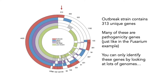When we look at those 313 genes, many of them are pathogenicity genes, just like that Fusarium example. The key point is that you can only identify these genes by looking at lots of genomes. If we had only the outbreak strain genome, we would have had many thousands of genes and wouldn't have known which ones are causing the damage. This comparative approach has narrowed it down from thousands of genes to just 300, giving you a much smaller set to work with to figure out what's going on and how to stop the outbreak.